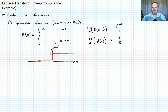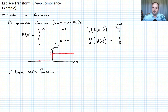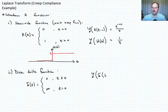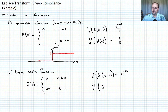The second function is the Dirac Delta function. We define Delta(t) as equal to 0 for t not equal to 0, and infinite when t equals 0. We can look up the Laplace transform in our table: the Laplace transform of Delta(t minus c) is e to the negative cs. For just the Laplace transform of Delta(t), that becomes e to the 0 power, which is just 1.